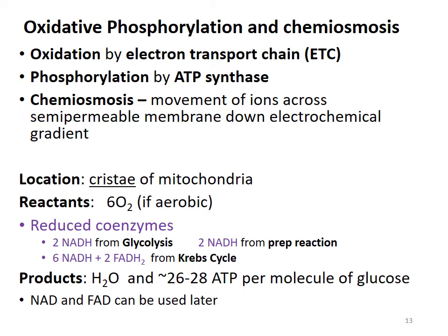In an aerobic organism like ourselves, we use oxygen here, along with the reduced coenzymes produced throughout the pathway: the 2 NADH from glycolysis, the 2 NADH from the oxidation of pyruvate, and the 6 NADH and 2 FADH2 from the citric acid cycle. The products will be water and about 26 to 28 ATP per molecule of glucose, and the NAD and FAD are regenerated.